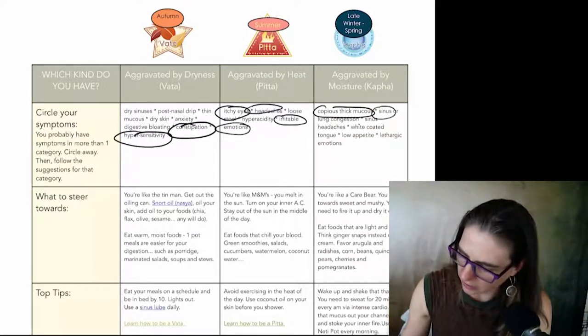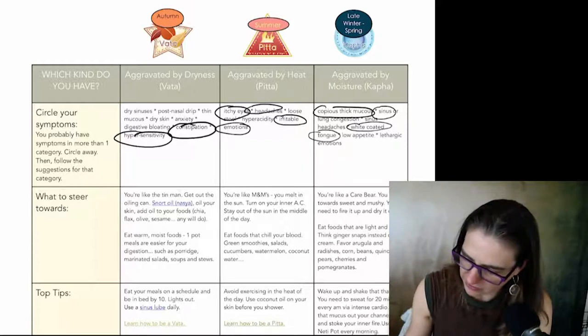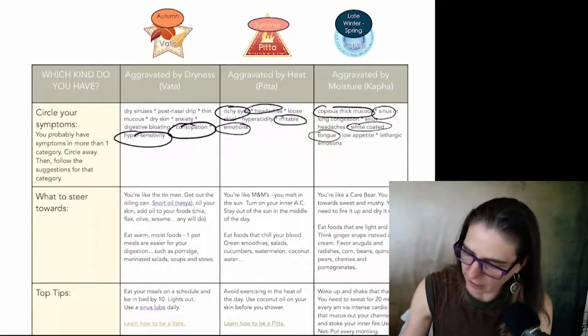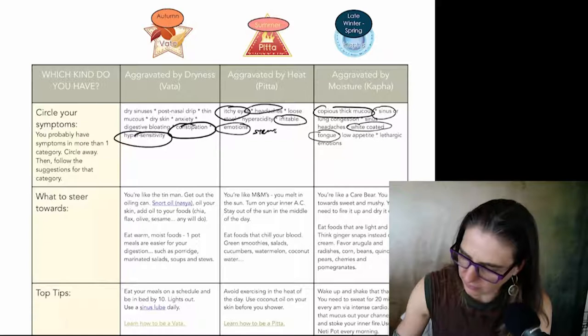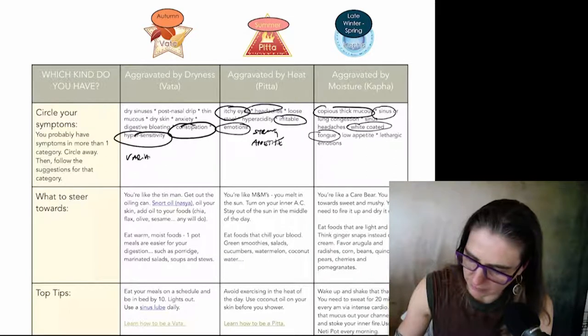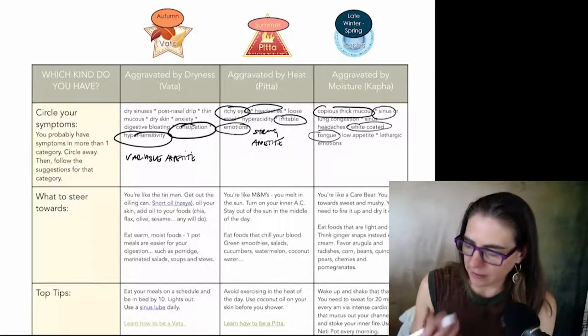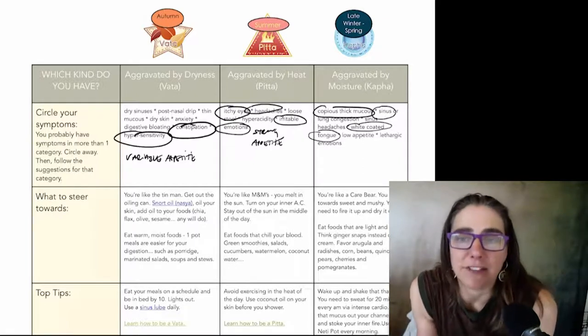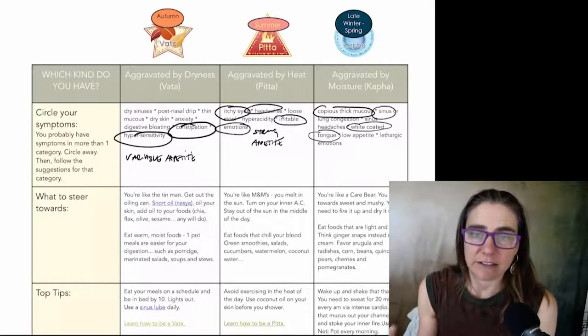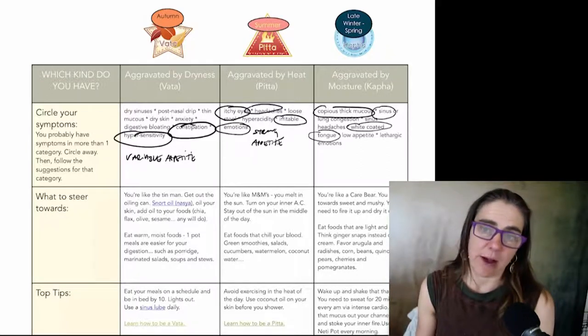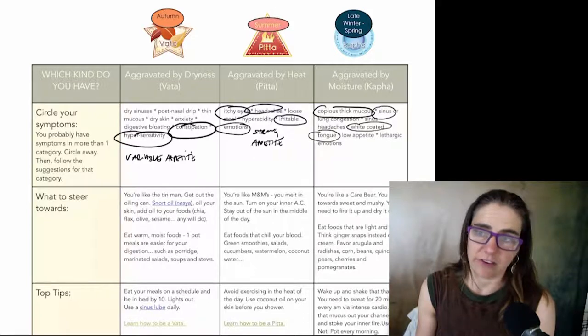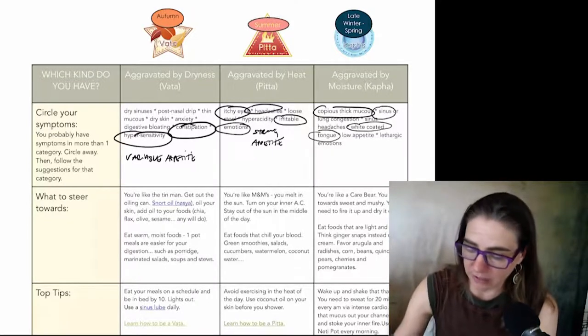I also had copious, thick mucus. I did not have, it was coming more from my sinuses, but they wouldn't get impacted. I had white coating on my tongue. I didn't have a sinus type headache and I didn't have a low appetite. I actually had a strong appetite, which would go more under Pitta is a strong appetite. Under Vata would be a variable appetite. All right. So these are just general groupings of symptoms. So if I were to look at this, I'd be like, I have symptoms in all three categories.